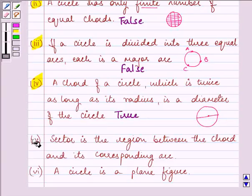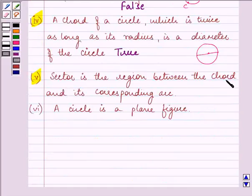Further, the sector is the region between the chord and its corresponding arc. This is the center and this is an arc, and the region between it is called the sector. But it is not between the chord, it is between the radius and the arc. So it will be a false statement.